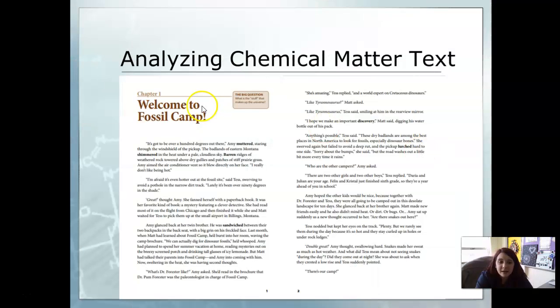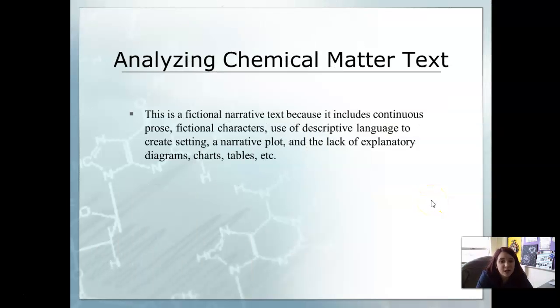The chemical matter text we just read is a fictional narrative because it includes continuous prose, fictional characters, descriptive language, a setting, a plot, and lacks explanatory diagrams, charts, or tables. We're analyzing these two kinds of texts—informational versus fictional. They both present similar information, but how the information is presented is different. The first text is very informational with just facts, while this one has more of a story aspect.